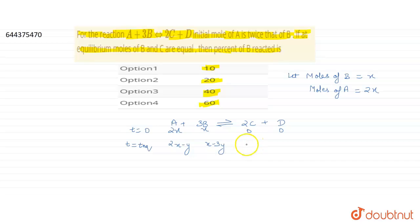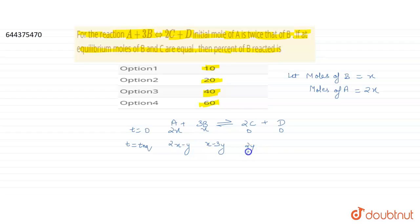The moles of the formed products at equilibrium will be: C becomes 2Y (since Y moles of A reacted and the coefficient of C is 2), and D becomes Y. So at equilibrium the moles of A, B, C, and D are 2X−Y, X−3Y, 2Y, and Y respectively.